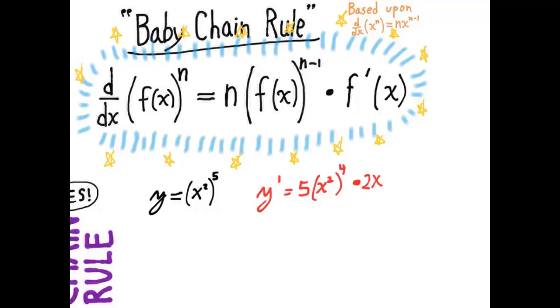5x squared to the fourth times 2x. That's what the baby chain rule says to do. Then if you simplify this by combining the 5 and the 2 to a 10, and x squared to the fourth times another x is x to the ninth, it turns out to be 10x to the ninth, which is the correct answer.